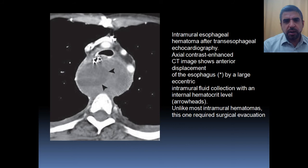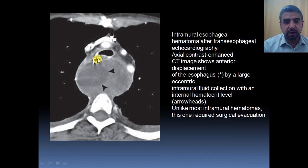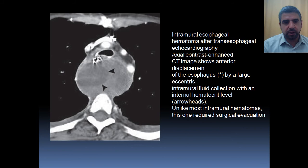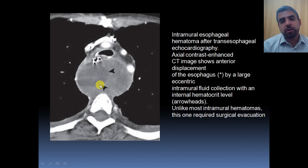For example, you can see here an intramural esophageal hematoma after transesophageal echocardiography. This is the true lumen of the esophagus, and you can see a complex cystic mass within the posterior wall of the esophagus causing mass effect on the esophagus and the trachea, pushing them anteriorly. Within the mass there is a fluid-debris level and a hematocrit level, indicating blood with sedimentation of blood products. This was a large hematoma that required surgical drainage.